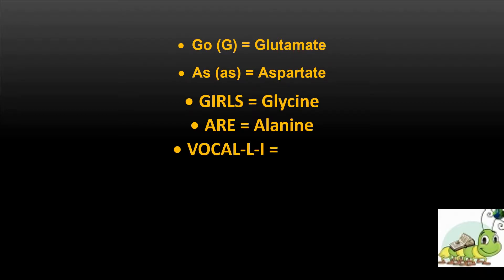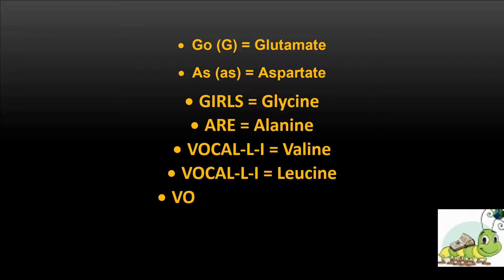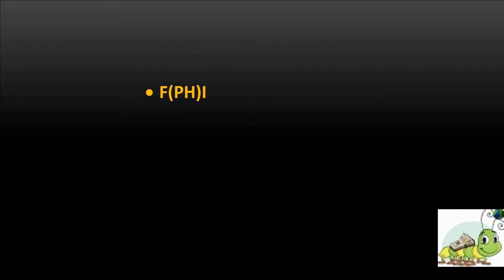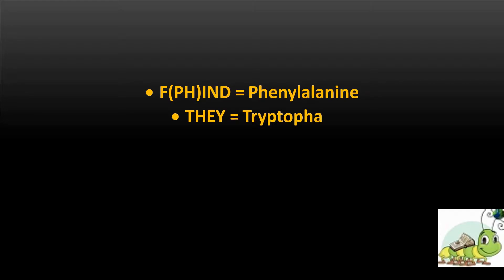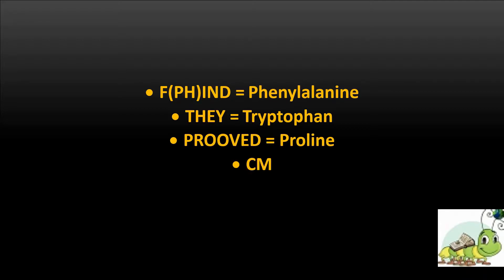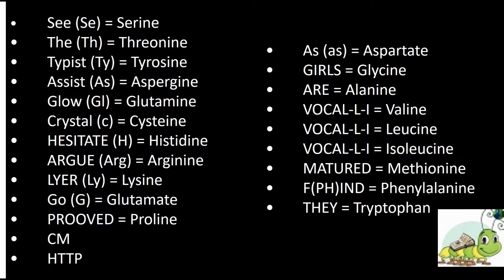'Vocally' — V — for Valine; 'Vocally L' for Leucine; 'Vocally I' for Isoleucine. 'Matured' for Methionine. 'Find' — F — for Phenylalanine (alternate of F). 'They' — T-H-E-Y — for Tryptophan. 'Proved' — P — for Proline. These are all the 20 words you have to remember.